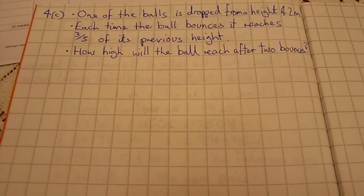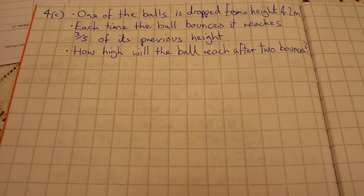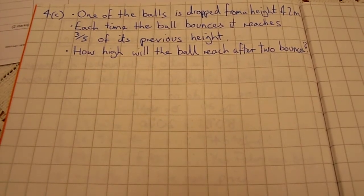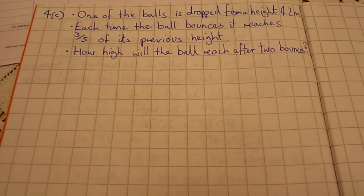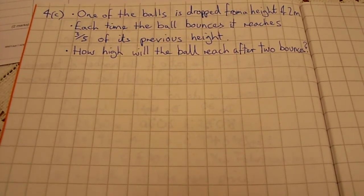Question 4c says one of the balls is dropped from the height of two meters. Each time the ball bounces, it reaches three-fifths of its previous height. How high will the ball reach after two bounces? So we need to do two things here: calculate the height after the first bounce and then use that height to calculate the height after the second bounce.